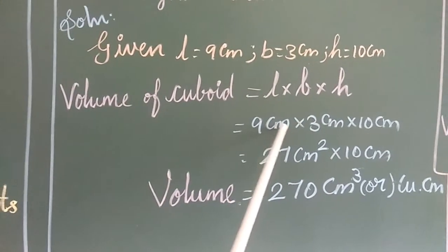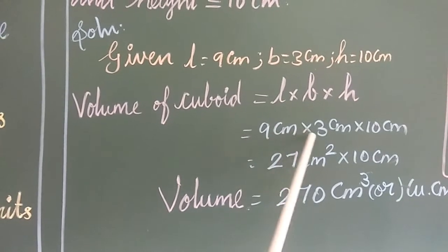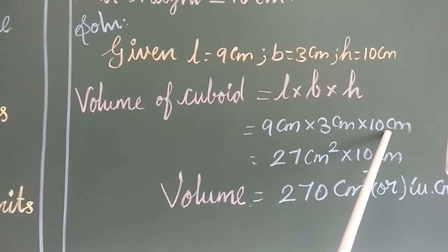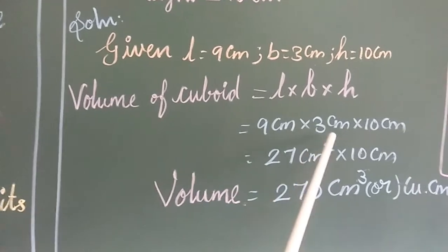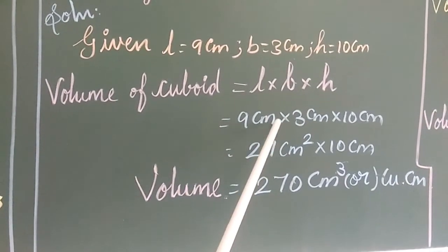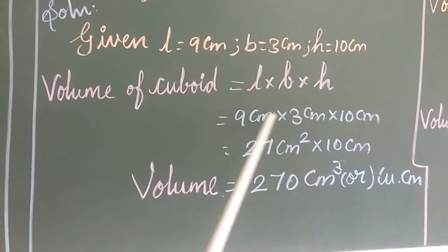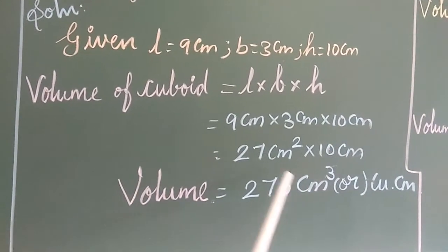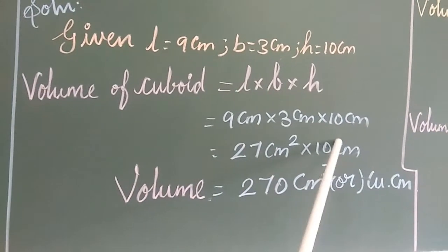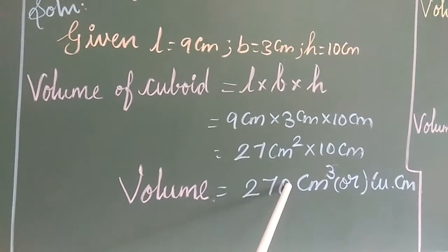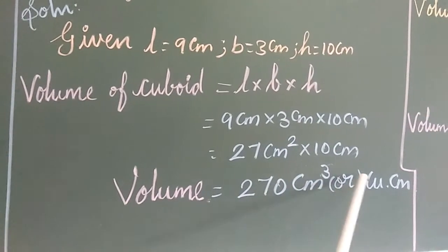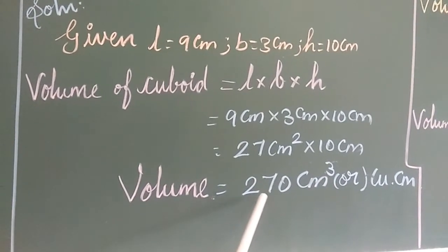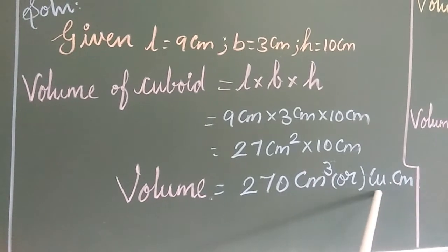The volume of a cuboid formula is L × B × H. So, volume = 9 cm × 3 cm × 10 cm. Let's do the multiplication: 9 × 3 = 27 cm². Then 27 × 10 = 270 cm³ or cubic cm. So, volume is 270 cubic cm.